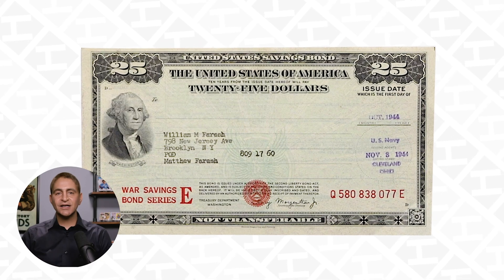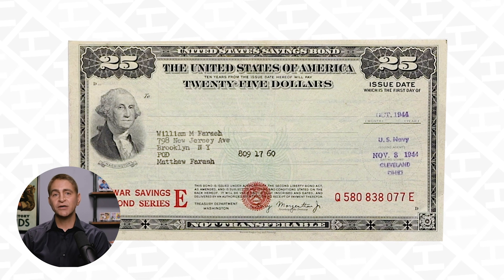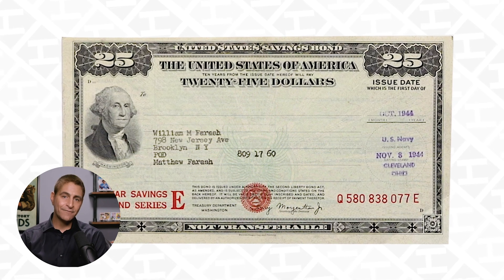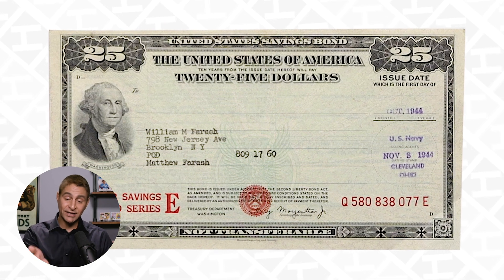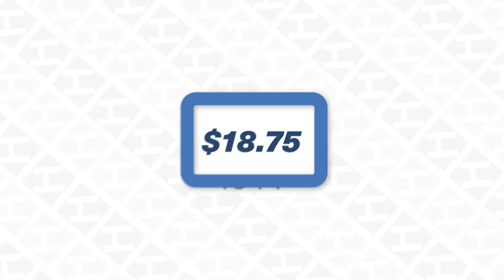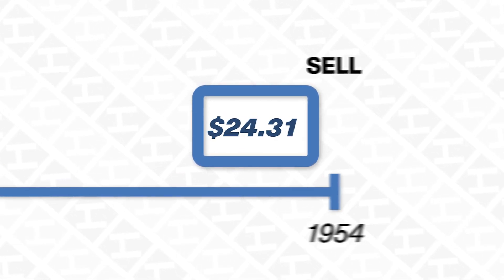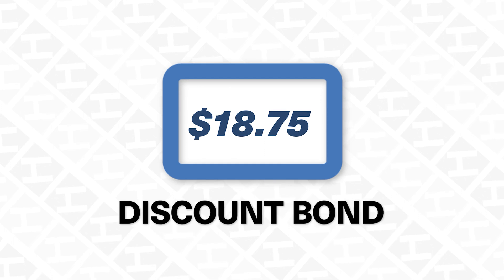In my hands I'm holding a savings bond from October 1944 — a United States savings bond. I'll put it down here so you can see it better. In October 1944, the US government had no idea how long World War II was going to last, so they had to raise money to pay for war supplies. They did so by selling debt — by selling bonds like this one. The US government said: 'If you buy this bond today for $18.75, in 10 years I'll buy it back from you for $25.'